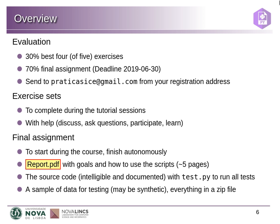For those who need grades, 30% of the grade will come from the best four out of five exercises — there are five sessions with one exercise for grading each, and the best four count for 30%. The remaining 70% will be your final assignment. I propose that you send everything by the end of June — just zip everything in a file, the assignment and the exercises, and send to the email address you used for registering in the course.